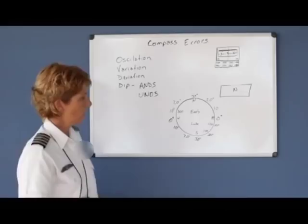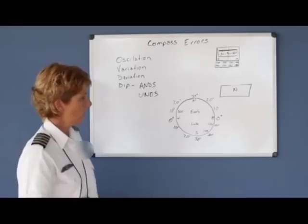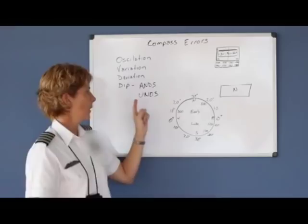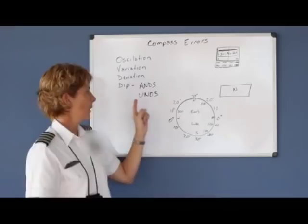Let's say that the controllers instructed us to turn to a heading of 030. If I were to turn to 030, I have to realize that it's a northerly heading turn, so I would have to roll out early by how much? 20 degrees.